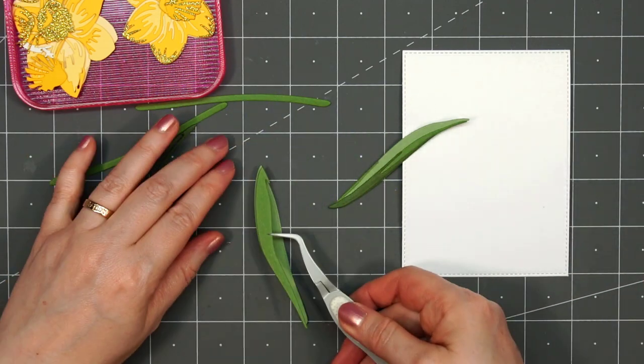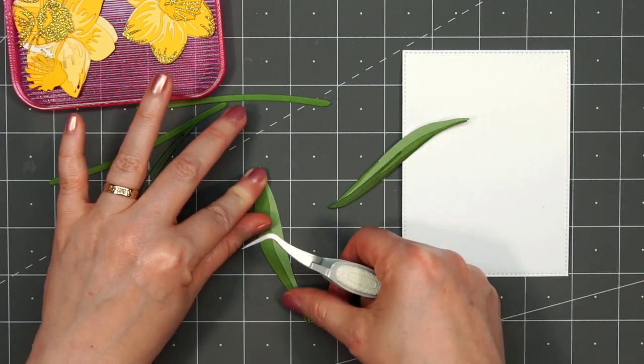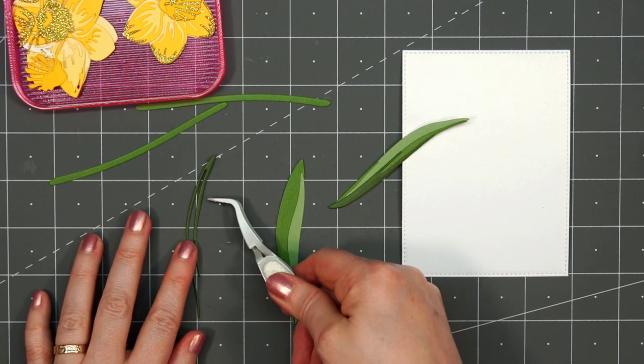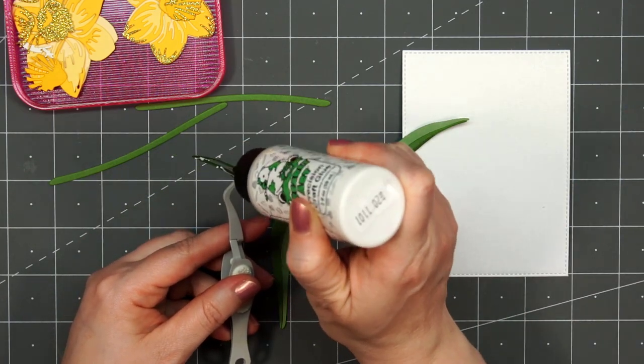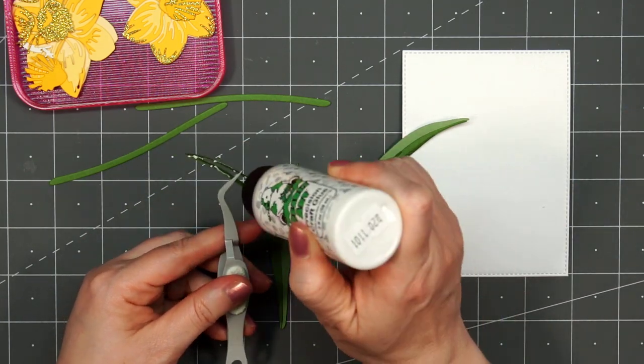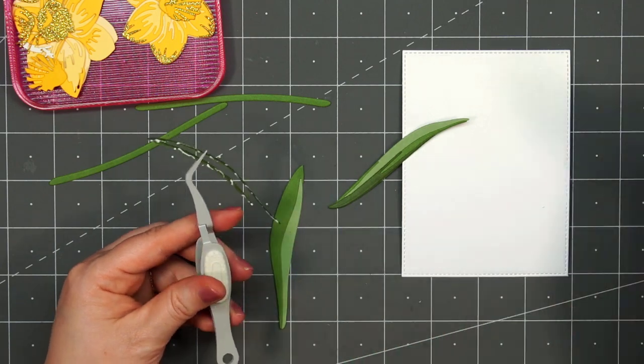For the leaves, there's two different styles. Each of them have three pieces. You want to find three different shades of green or whatever color you're going to use for your leaves.